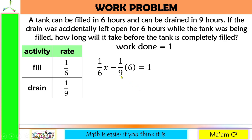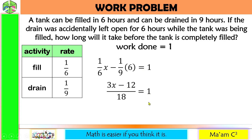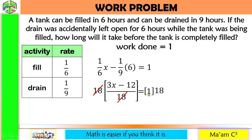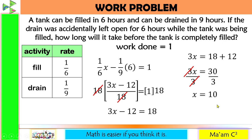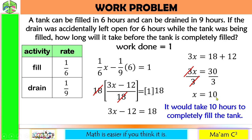The LCD of 6 and 9 is 18. Multiplying through: 18 divided by 6 is 3 times x gives 3x, and 18 divided by 9 is 2 times 6 gives 12. So we have 3x minus 12 equals 18. Moving negative 12 to the other side gives 3x equals 30. Dividing both sides by 3: x equals 10. So it would take 10 hours to completely fill the tank.